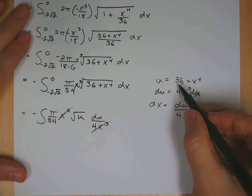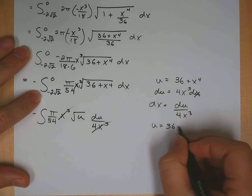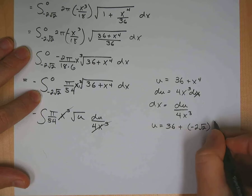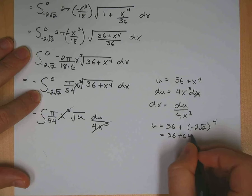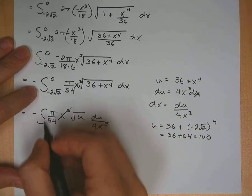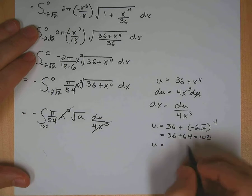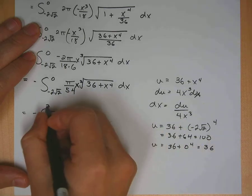So get your limits, your new limits from here. Let's go with our old one, our bottom one first. So u is equal to 36 plus negative 2 square root of 2 to the 4th. Okay. That's going to be equal to 36 plus 64, which is 100. That's my lower limit. And u is equal to 36 plus 0 to the 4th, which of course is 36.